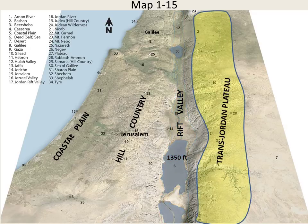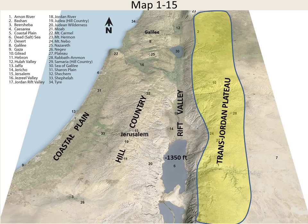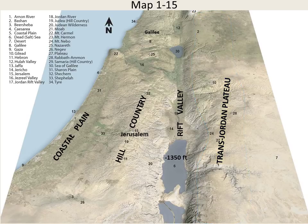The fourth major longitudinal zone is the Transjordan Plateau. It can reach over 3,000 feet in elevation and includes the areas around ancient Moab, a plateau, Gilead, and Bashan, all the way up to Mount Hermon. There they are — the four major longitudinal zones of the land of the Bible: coastal plain, the hill country, the rift valley, and the Transjordan Plateau.